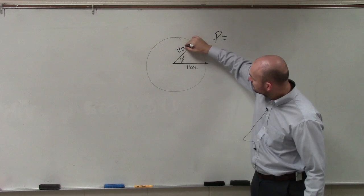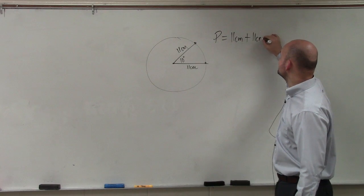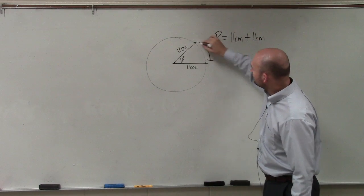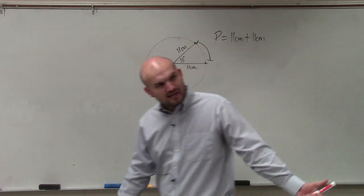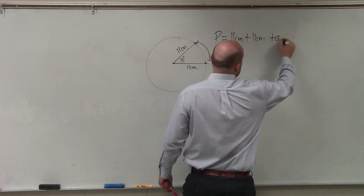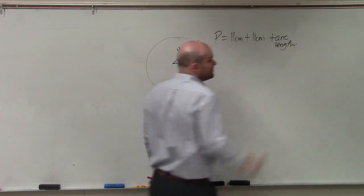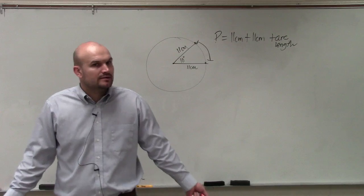11. So my perimeter is going to be 11 centimeters plus 11 centimeters plus whatever this is. And what we talked about last class period is that is the arc length. So now, to find the perimeter, all we have to do is find the arc length.